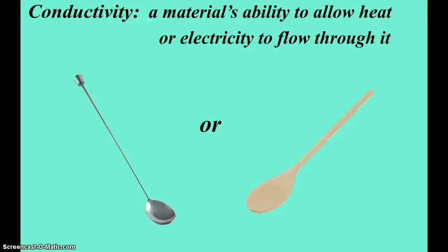Conductivity is a material's ability to allow heat or electricity to flow through it. Metals are good conductors. Wood and plastics are not as good conductors. When you're cooking on the stove and stirring something very hot, a wooden spoon is a better choice than a metal spoon, because over time that metal spoon will take on the heat of the substance.